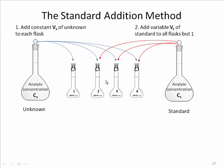These other three flasks contain analyte from two sources. There's some analyte in here from the addition of the unknown solution. But then added to that has been some analyte from the addition of the standard solution. And then each of these little volumetric flasks is just filled up to its mark, to its total volume.